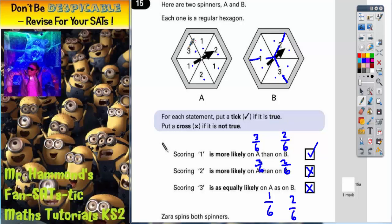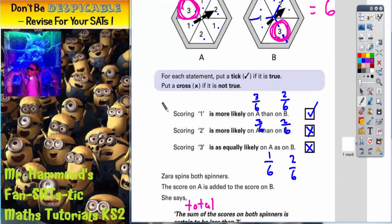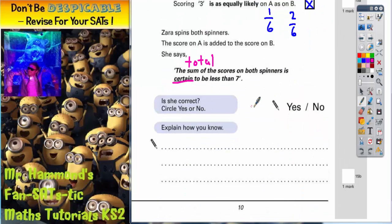The top score on spinner A is a three. The top score on spinner B is also a three. So if she gets the top score on both spinners, the highest possible total she can get would be six. Because three plus three equals six.